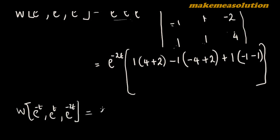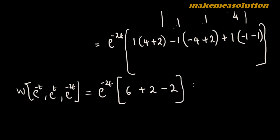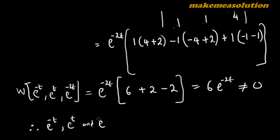Combining all terms, the Wronskian W(e^(-t), e^(t), e^(-2t)) = e^(-2t) × 6 = 6e^(-2t). This is not equal to zero, so the Wronskian is 6e^(-2t). This implies that e^(-t), e^(t), and e^(-2t) are linearly independent.